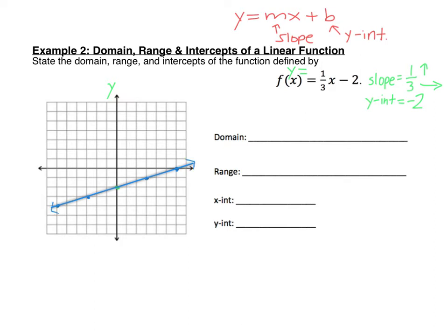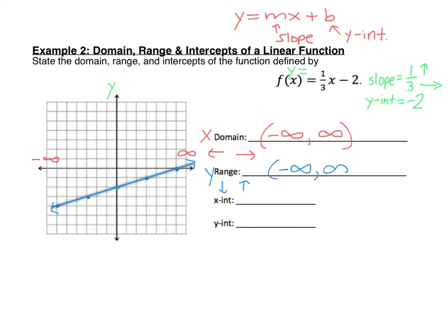Now let's go ahead and answer our questions. For the domain, remember the domain is the set of inputs or the x values in the function, and we're looking for the left boundary and the right boundary. A line like this points forever to the left, so if there are arrows on the end, your domain is at one of the infinities. Negative infinity is my leftmost boundary, and since it points forever to the right as well, positive infinity is our rightmost boundary. So the domain here is all real numbers. For the range, I'm looking at the y values — the lowest and highest points. This graph goes down and to the left forever and up and to the right forever, so the range is also from negative infinity to positive infinity — all real numbers.